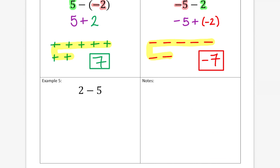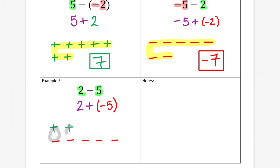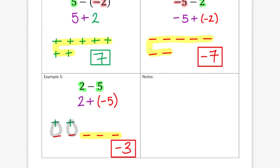Our final example: we're starting with positive two and we're subtracting positive five. So I'm going to start with my positive two — one, two. That doesn't change, but I'm going to change my subtraction to adding, and the opposite of positive five is negative five. So I'm going to add five negatives here. I've got some zero pairs, and it looks like I have three negatives left over, so my answer is negative three.